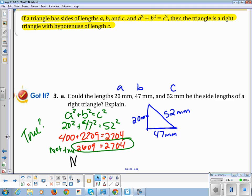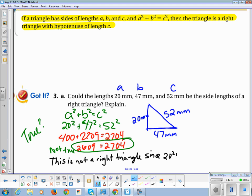So let's explain using our sentences, use our words, use your words. This is not a right triangle since 20 squared plus 47 squared is not equal to 52 squared.